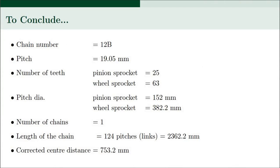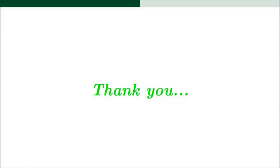The final specifications of the selected chain are: chain number 12B, pitch 19.05 mm, number of teeth on pinion sprocket Z1 = 25 and wheel sprocket Z2 = 63, pitch diameters D1 = 152 mm and D2 = 382.2 mm, number of chains = 1, chain length = 124 pitches = 2362.2 mm, and corrected center distance = 753.2 mm.